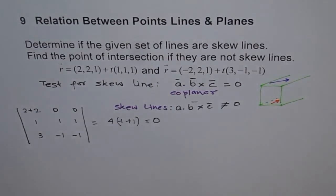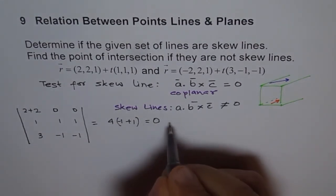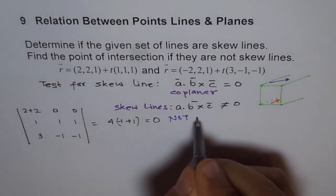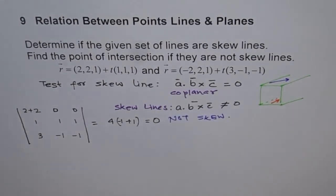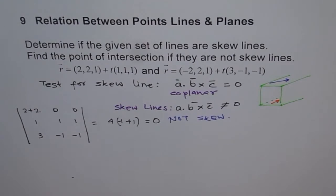Since the scalar triple product equals zero, that means the lines are not skew — they will intersect. So let's find the point of intersection. To find the point of intersection, it is better to write our equations in parametric form.